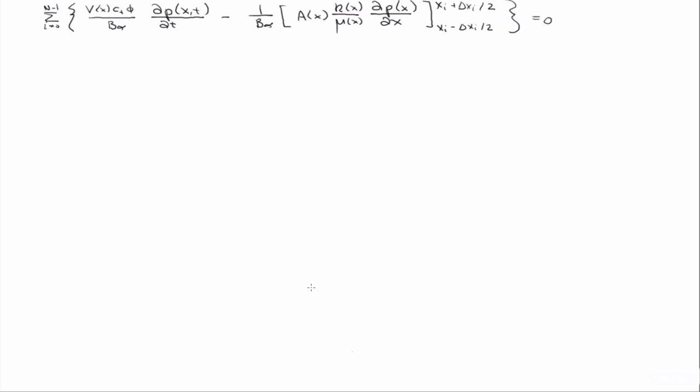During the derivation of the finite volume method last time, at some point we had this exact equation here. And we made the assumption that the cross-sectional area, the permeability, the viscosity, a, k, mu, were constant, and so we pulled them outside this evaluation.